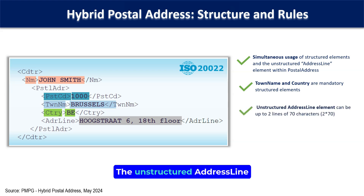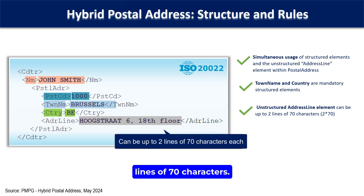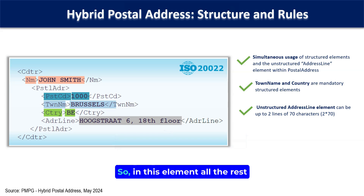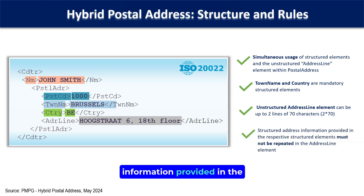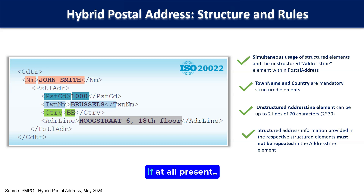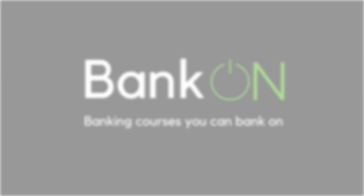The unstructured address line element within the hybrid address can be up to two lines of 70 characters. In this element, all the rest of the address other than town and country name can come all together. The structured address information provided in the respective structured elements must not be repeated in the address line elements. So town and country names, and any other structured element if at all present — for example, postcode — should not get repeated in the address line element.